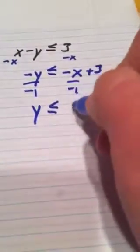Come back up, get the second line, solve for y by subtracting x from both sides, so I'll have negative y is less than or equal to negative x plus 3. Divide both sides by negative 1, every piece. So I'll have y is less than or equal to x minus 3.